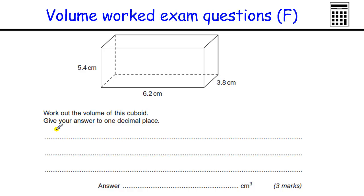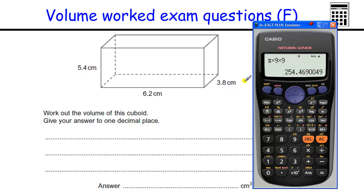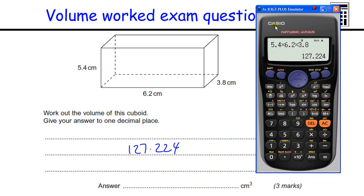OK, work out the volume of this cuboid. Calculator at the ready. Let's clear that. So we've got three numbers. In the volume question, we need to multiply the length by the breadth by the height. So we just multiply these three numbers. And that gives us 127.224. That would give you two marks.